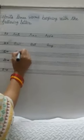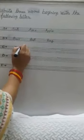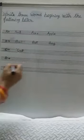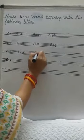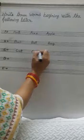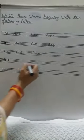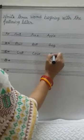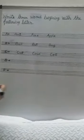C for cat. C-A-T, cat. Cat means billy. C-O-W, cow. Cow means guy. C-O-T, cot. Cot means khatia.